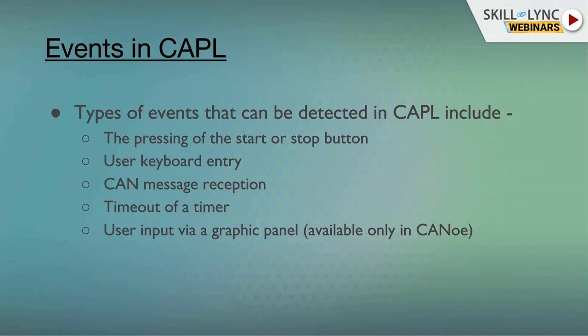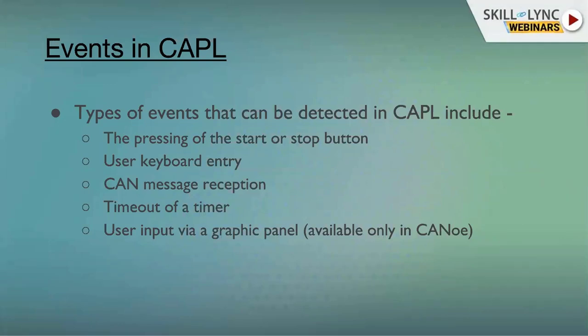CAN message reception: whenever a CAN message with a particular ID arrives in the network, you can react to it. For example, if a message with ID 100 arrives, you can respond by sending message 200 into the network. You write a program to handle this message reception event.